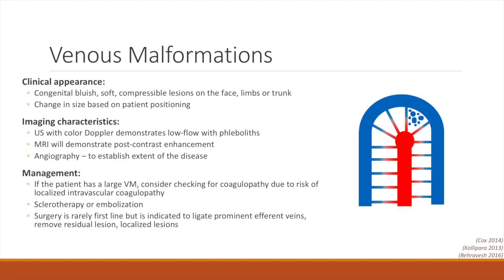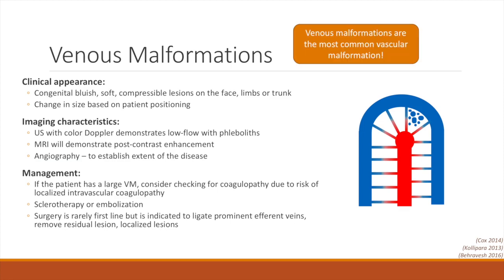Venous malformations are composed of abnormal venous channels and are the most common type of vascular malformation. Venous malformations may appear anywhere on the body as a soft compressible lesion that may have blue or purple discoloration. Some distinguishing characteristics unique to venous malformations include changes in size based on patient positioning or activities such as crying, and unlike lymphatic malformations, these lesions should not enlarge with infection. As venous malformations and lymphatic malformations can appear very similar clinically, imaging will usually be needed to confirm the diagnosis.